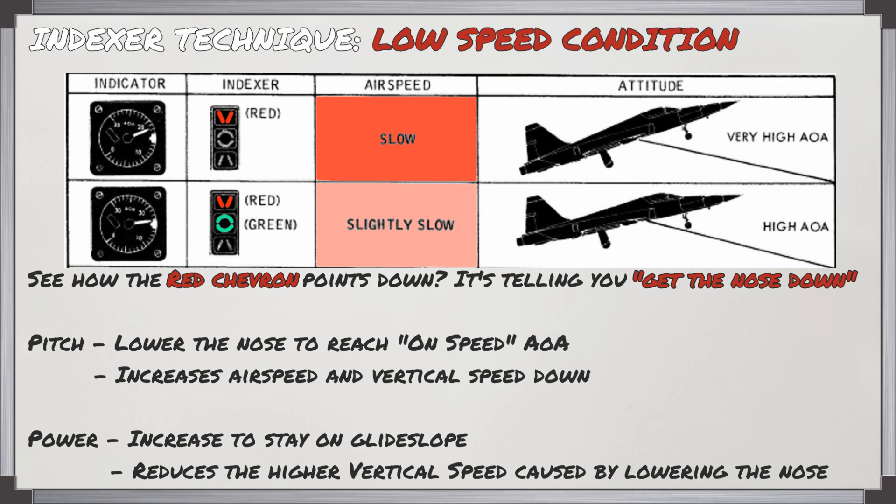In a low speed condition, you're going to see a red chevron pointing down, telling you that for the angle of attack, you're too slow — get the nose down. By using your pitch, you'll lower the nose to reach the on-speed angle of attack. This will increase your airspeed but also your vertical speed downwards, so you'll need to increase power to stay on the glide slope and counteract the higher sink rate induced by lowering the nose.